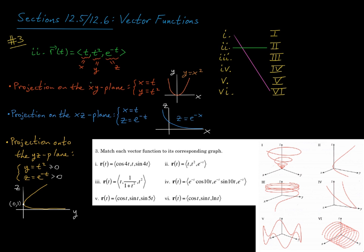If I look at the projection of this curve onto the xy plane — ignoring the z coordinate and just thinking about x and y — so x is t and y is t squared. These are parametric equations for a parabola. So if I project the curve onto the xy plane, I should get a parabola. Looking through the options, that's only the case in graph 2. That's enough to single out graph 2.